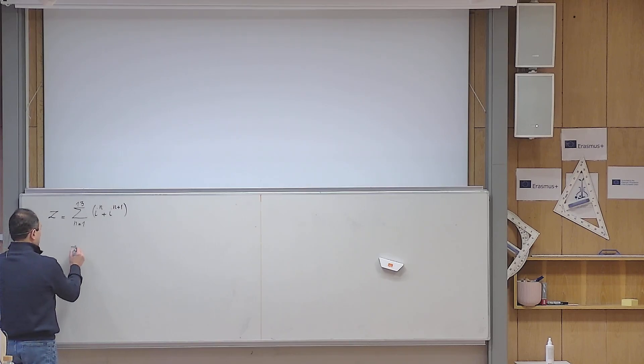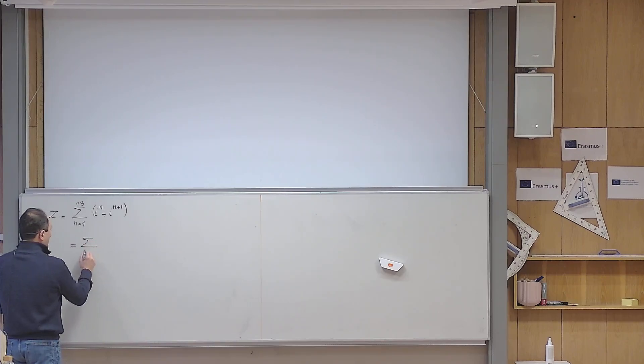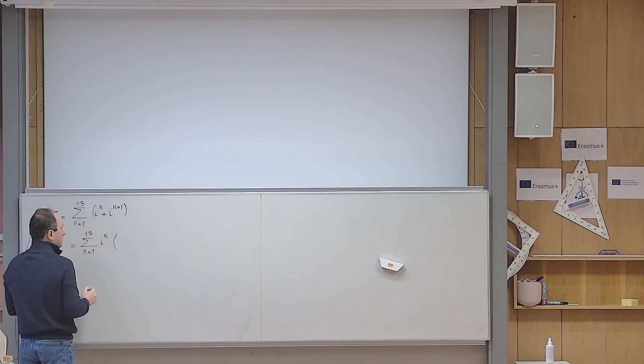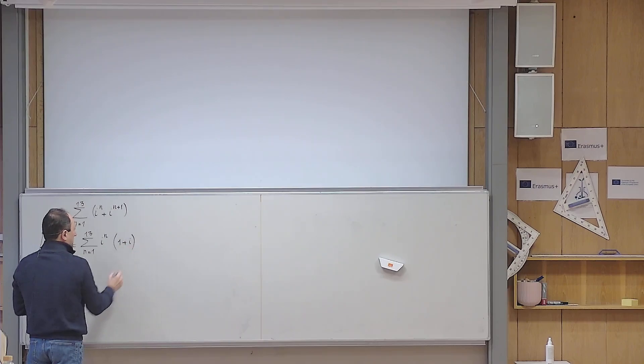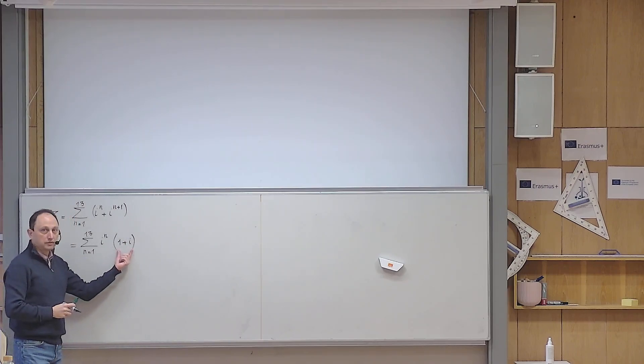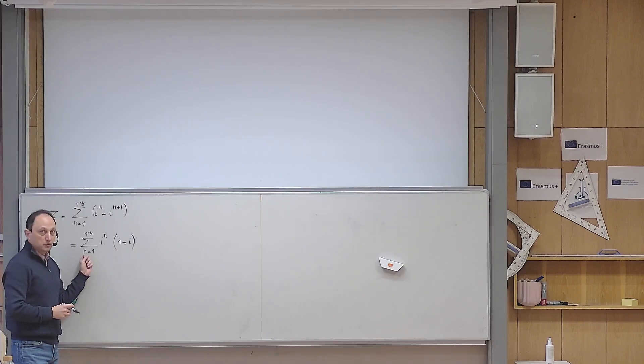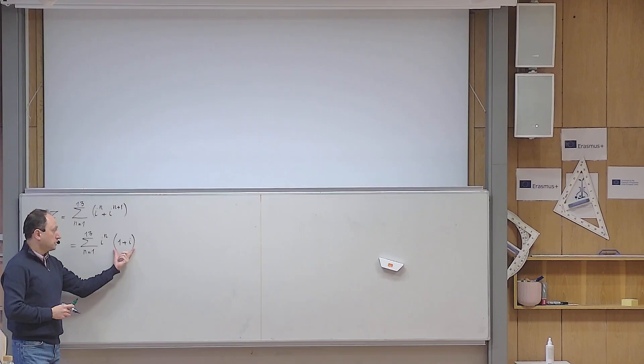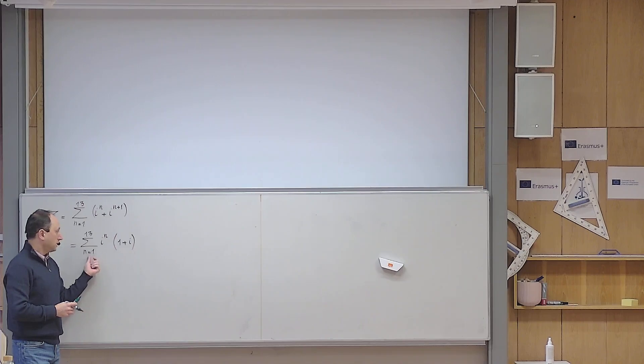So this becomes the sum, n goes from 1 to 13. I factor i to the n out, and then from here 1 is left, from here i is left. So let me write it as 1 plus i. But now what you see is that this is a factor which does not depend on the counter of the sigma, which is n in this case. This term depends on n, but this term is just a constant complex number which does not depend on n. So I can pull this out from the sigma.